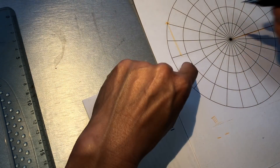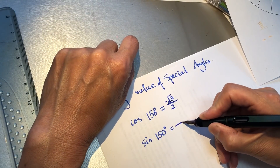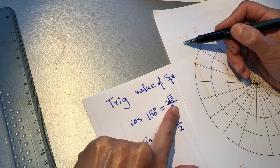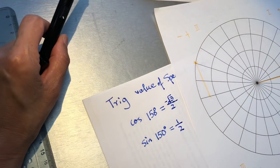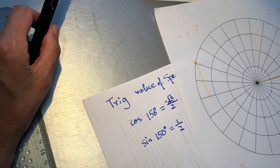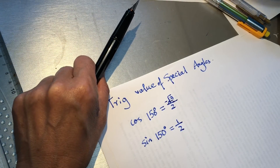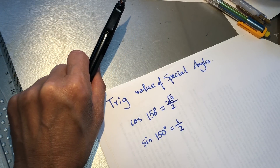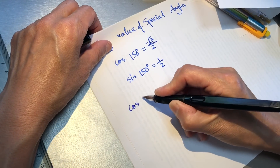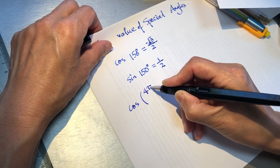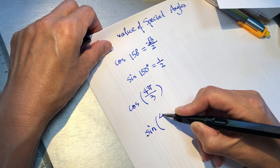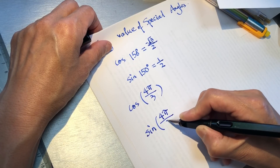Sine is the y value — this is 1 over 2. The x value is negative and the y value is positive. Now the next one: cosine of 4 pi over 3 and sine of 4 pi over 3.